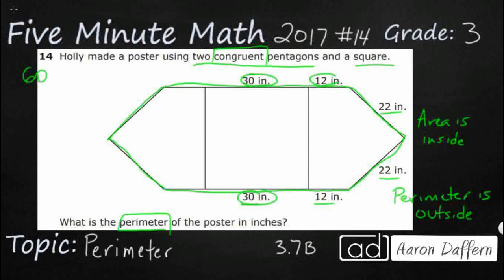So two thirties is sixty. I'm going to say two twelves is twenty-four. And I don't have to regroup with any of these. Two twenty-twos is going to be forty-four.